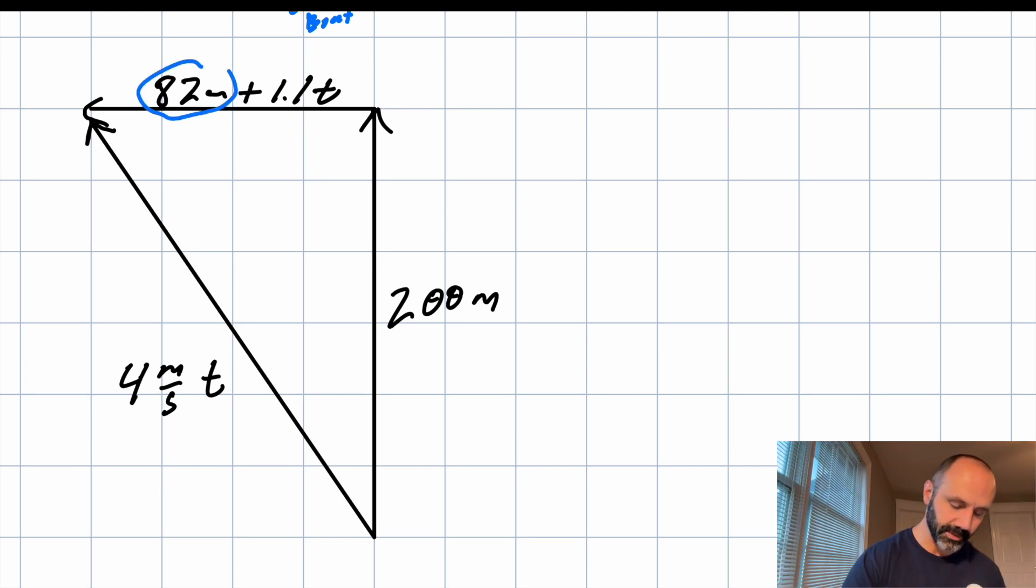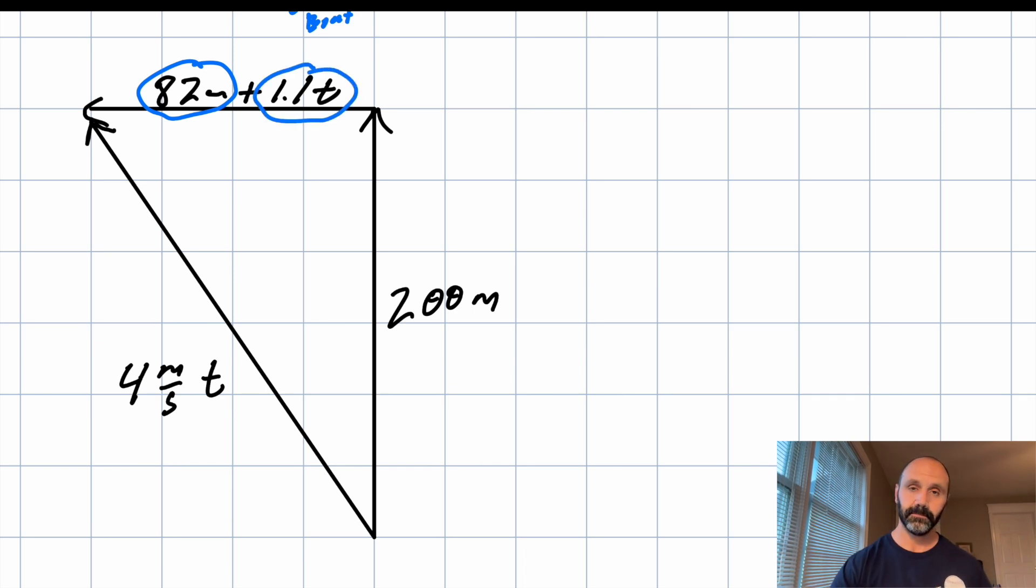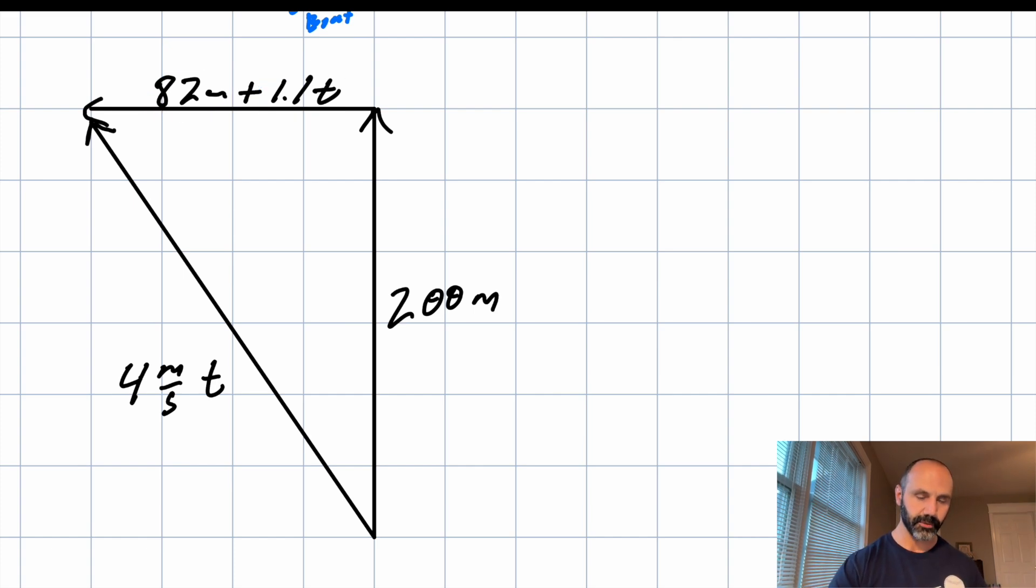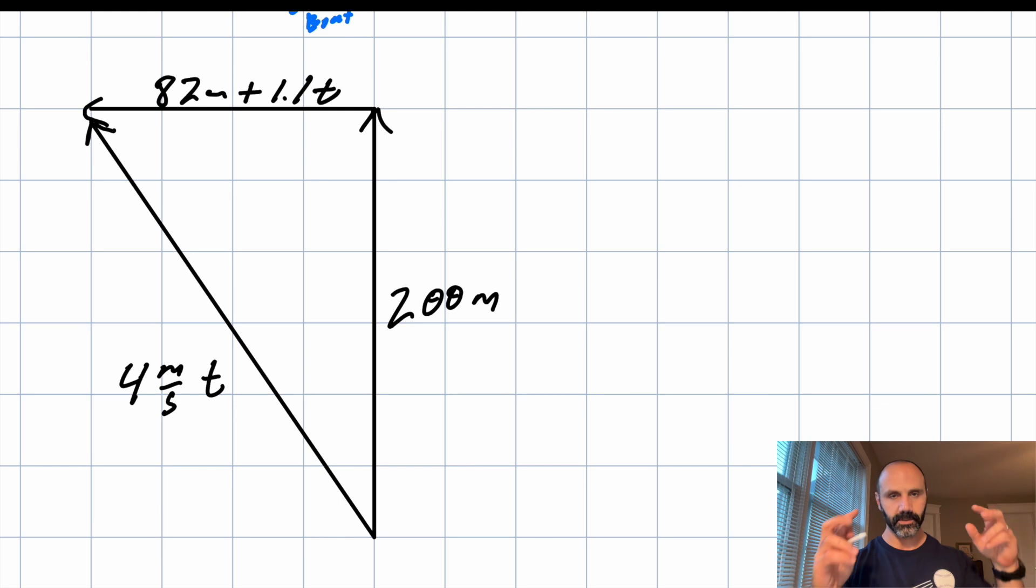So 82 meters, that's the distance upstream relative to the shore. And then this is the extra distance that the river moves past the boat as the boat is moving upstream. 1.1 is the velocity of the river. So that times the time, we don't know the time, but whatever the time is, that's going to be multiplied by the velocity of the river. And we'll be able to get that extra distance that the river traveled under the boat, we could say, as it was going 82 meters upstream relative to the shore.